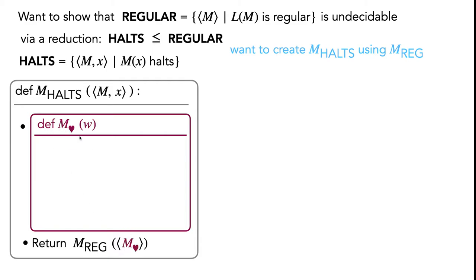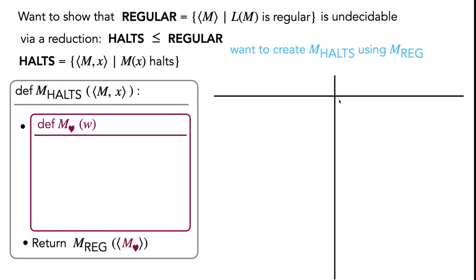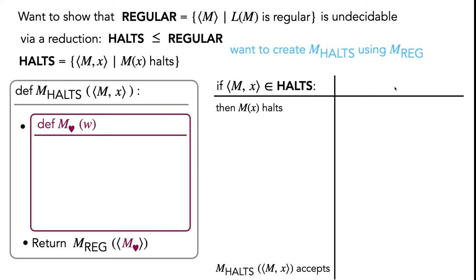Let's call this new Turing machine mHeart, with input string w. The question becomes: what goes on in the body of this machine? Ultimately, our goal in creating mHeart is to ensure that it has a regular language if and only if m on x halts. It can help to jump ahead and look at the proof of correctness. Our proof of correctness will show that if mx is an element of HALTS, then our constructed machine mHALTS should accept; and if mx is not an element of HALTS, it should reject.